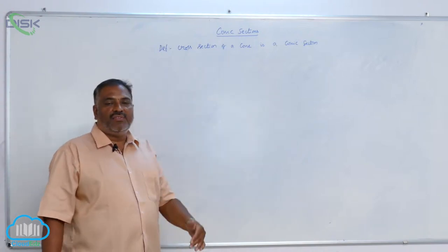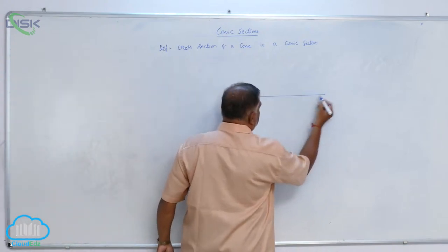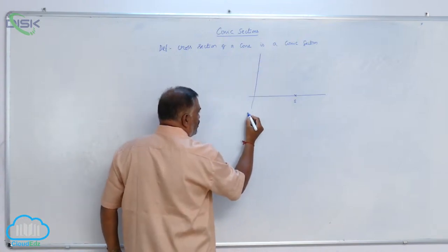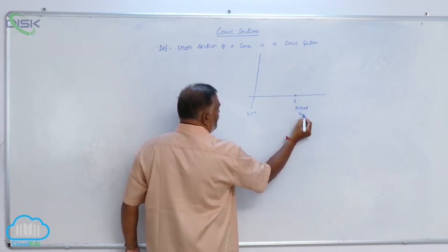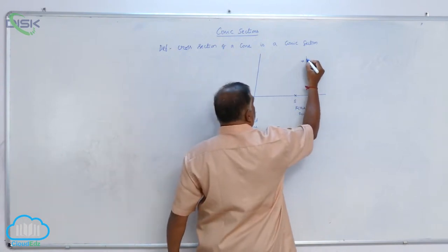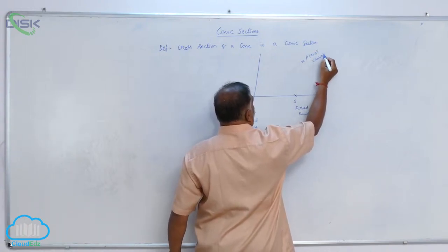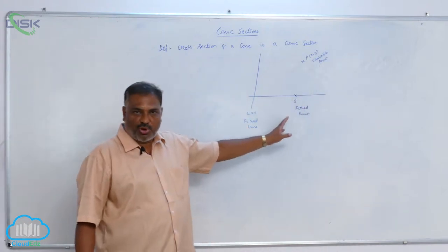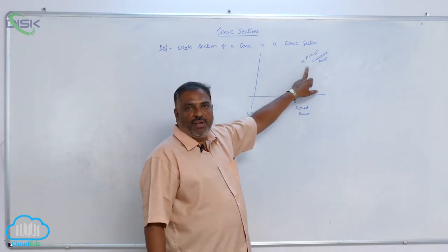Now, let us consider S is a fixed point, L equals 0 is a fixed line. This is a fixed point and this is a fixed line. Now, P is a variable point, x comma y. This is a variable point. I repeat once again. Let S be the fixed point, L equals 0 is the fixed line, P is a variable point.